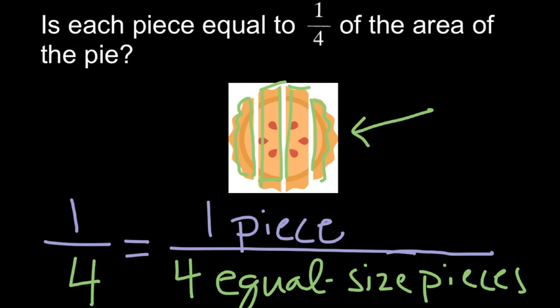If you love cherry pie, you are not happy about getting this end piece because it is smaller. It is not an equal size piece. So yes, each piece is one out of four pieces, but it is not one of four equal size pieces.